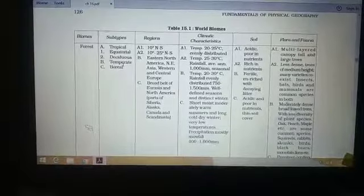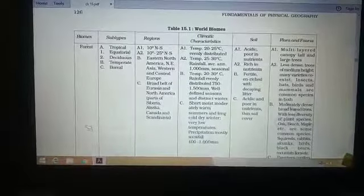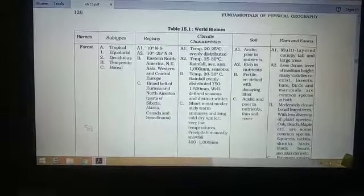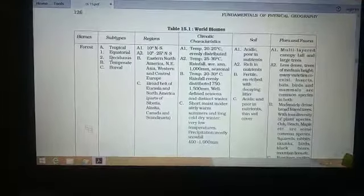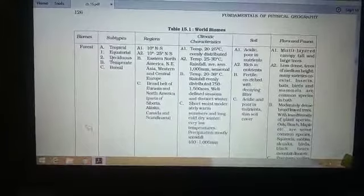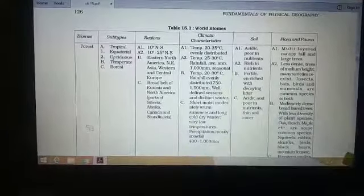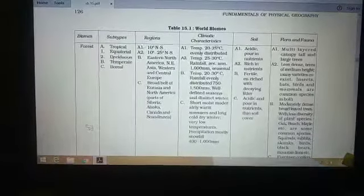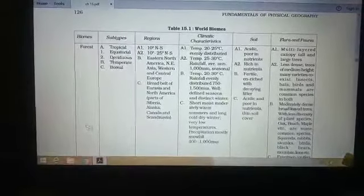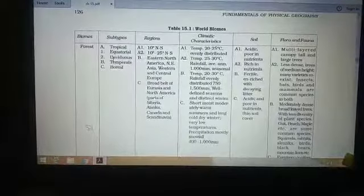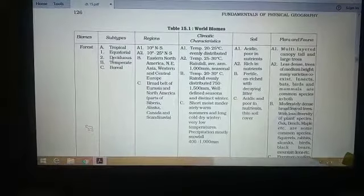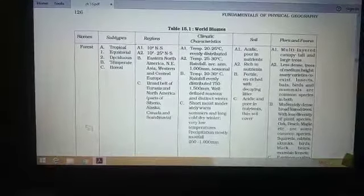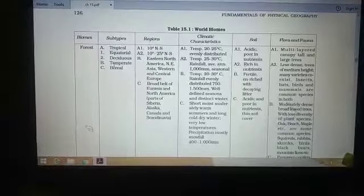The fauna includes frogs, salamanders, turtles, snakes, lizards, squirrels, rabbits, deer, bears, raccoons, foxes, and songbirds. So in which point the equatorial and the deciduous forest is different? Equatorial forest is situated in the high rainfall region, that is true, 200 centimeters throughout the year and no month has less than 10 centimeters of rainfall. But the deciduous forest, the rainfall is 75 to 150 centimeters throughout the year and the deciduous forest shade their leaves.